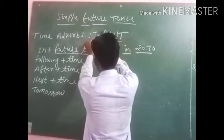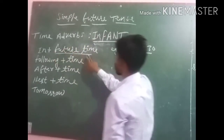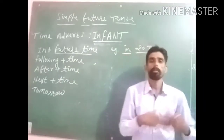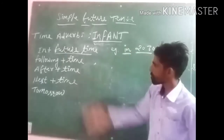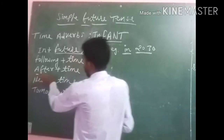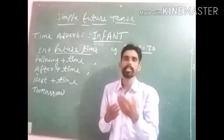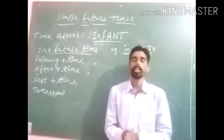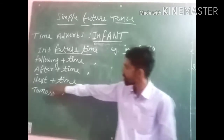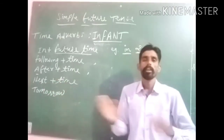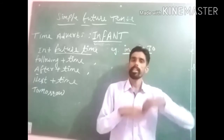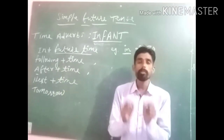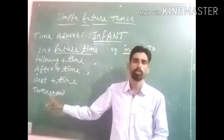The short trick is INFANT: 'I' for 'in plus future time'; 'N' for 'following plus time' — for example, 'in the following month'; 'F' for 'after plus time' — for example, after 2 days, after 10 years, after this decade; 'A' for 'next plus time' — for example, next month, next year, next semester; and 'T' for 'tomorrow,' the most frequent time adverb of this tense.